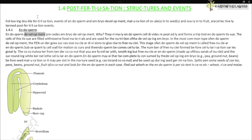Endosperm development precedes embryo development. The primary endosperm cell divides repeatedly and forms a triploid endosperm tissue. The cells of this tissue are filled with reserve food materials used for the nutrition of the developing embryo. In the most common type of endosperm development, the PEN undergoes successive nuclear divisions to give rise to free nuclei.